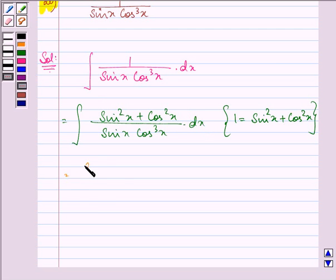Now here we can write it also as sin square x divided by sin x cos cube x plus into dx.